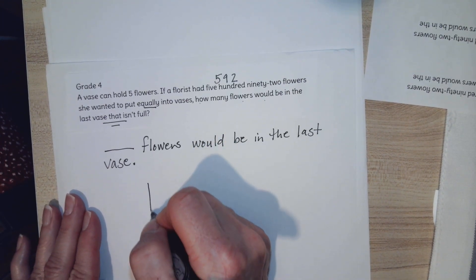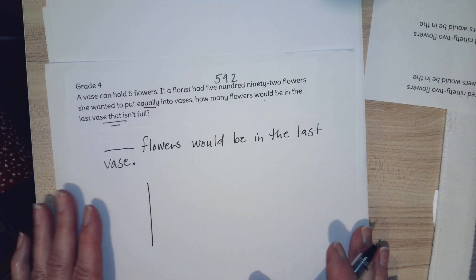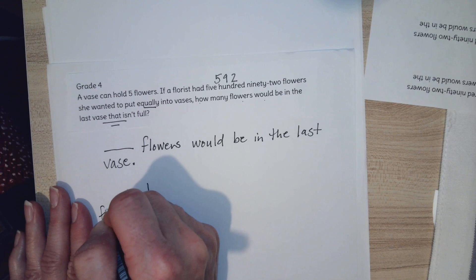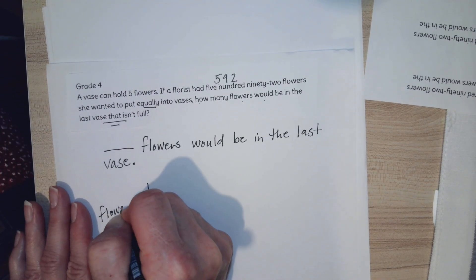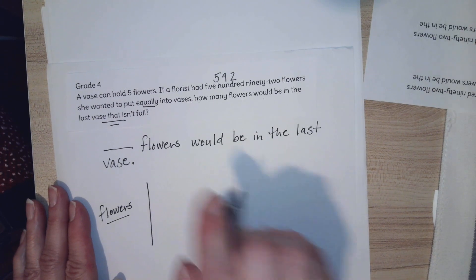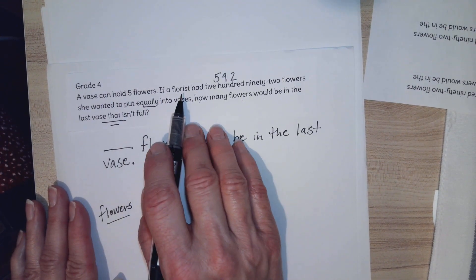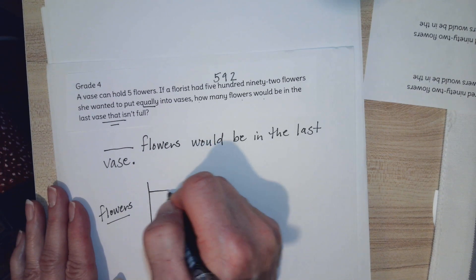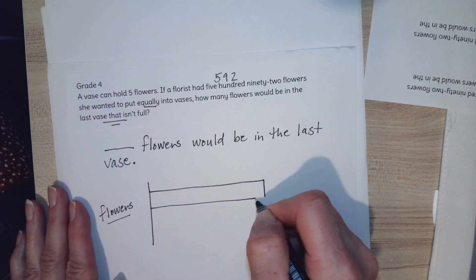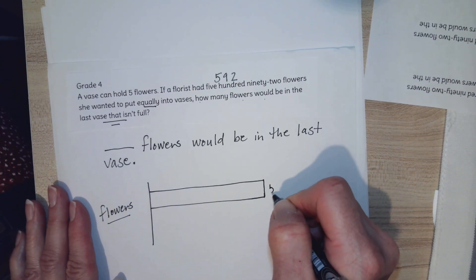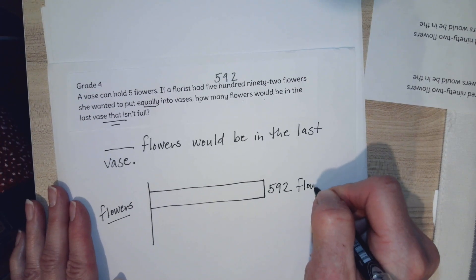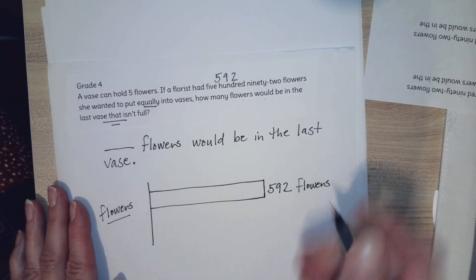Let me see how I can represent this before I solve it. I'm looking for how many flowers. When I read this it says a florist had 592 flowers, so they are giving me a total. So I'm going to make my bar. I know there are 592 flowers.